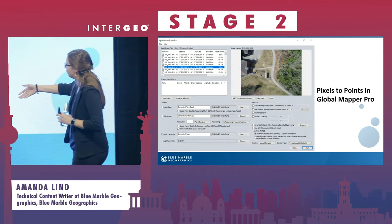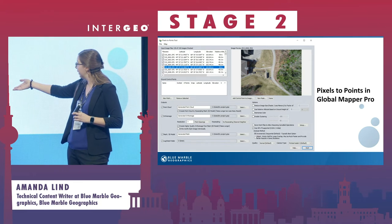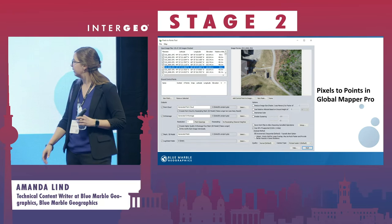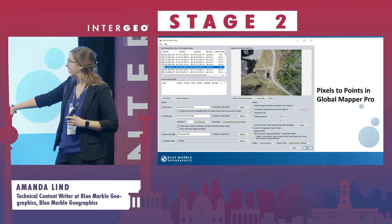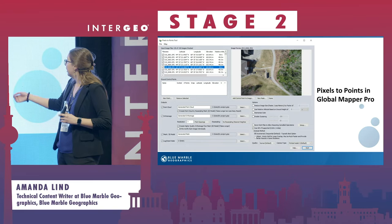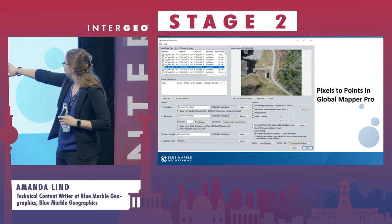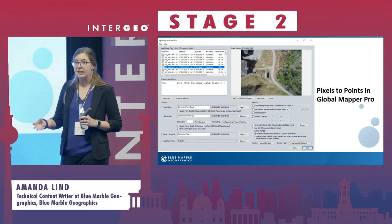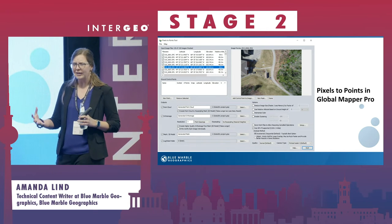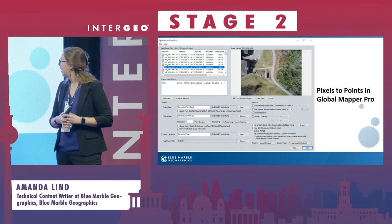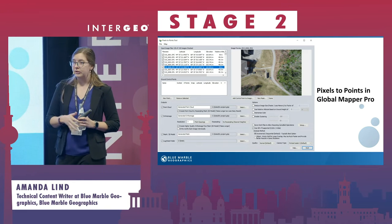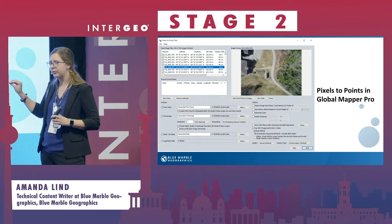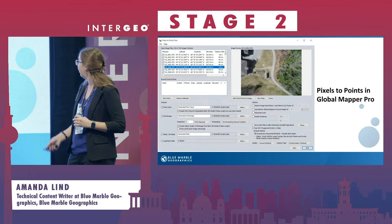These options allow you to choose what you'd like your output to be — whether it's a point cloud, an ortho image, or a 3D mesh. All of these can be edited in Global Mapper further on. There's also the option to reduce image size, to bring the resolution down to process more quickly, which is especially useful on a less powerful desktop computer. Version 25 has increased processing speed a lot, so you'll probably not have to use that quite as much as in previous versions.